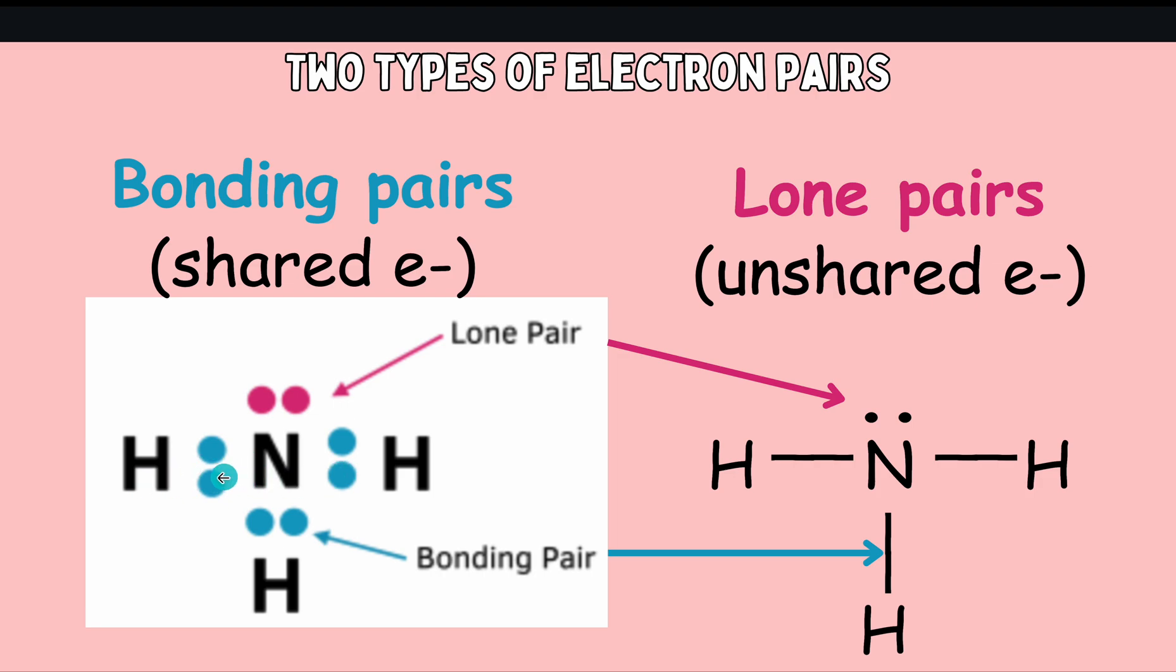This shared electron pair, we also represent with a line, a connecting line that's going to connect those two different atoms together. One of these single bond lines represents two electrons, one being shared from each of the atoms that make up this bond.